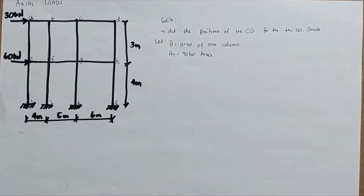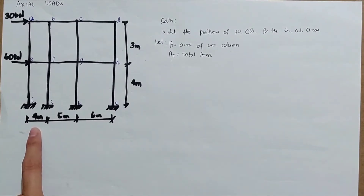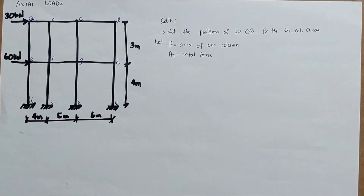Our topic is about actual loads. We have here frames with lateral loads: 30, 60, 4, 5, 6, and the height is 4 meters and then 3 meters. To determine the actual loads, the first step is to determine the positions of the center of gravity (CG) for the column areas.